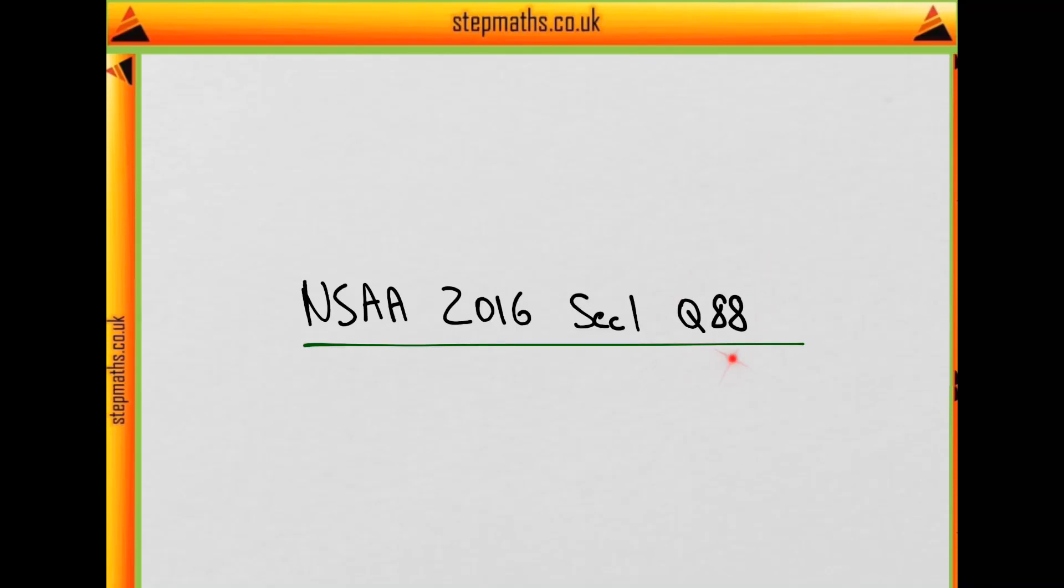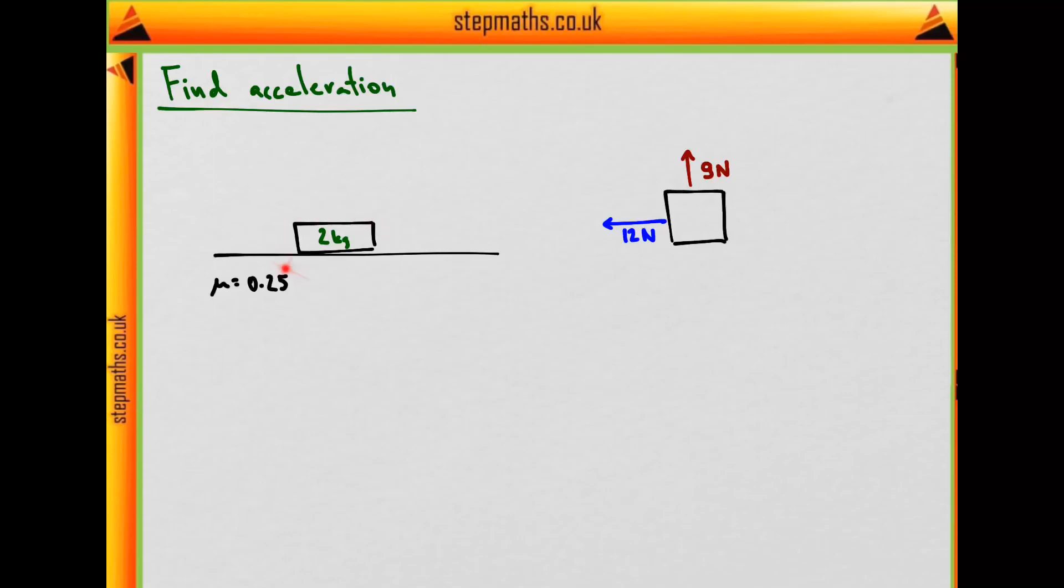In this video we'll look at question 88 from the 2016 exam. In this question we have a 2 kilogram block on a rough surface of coefficient of friction 0.25.